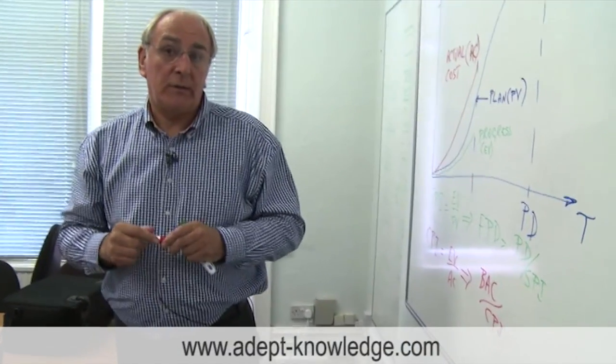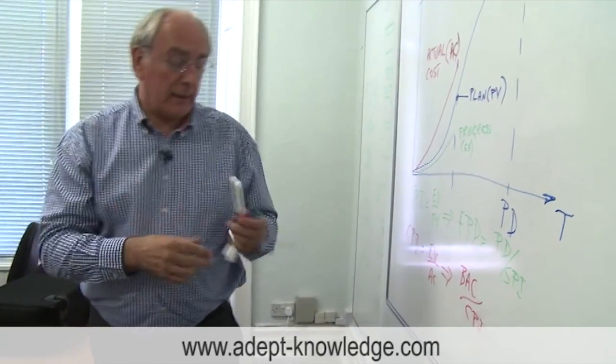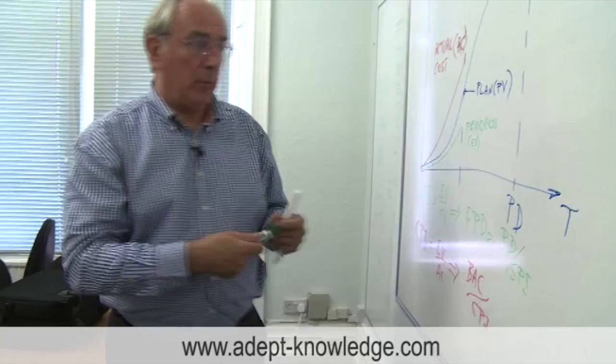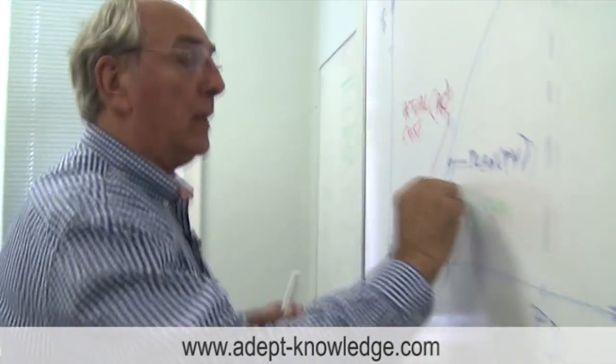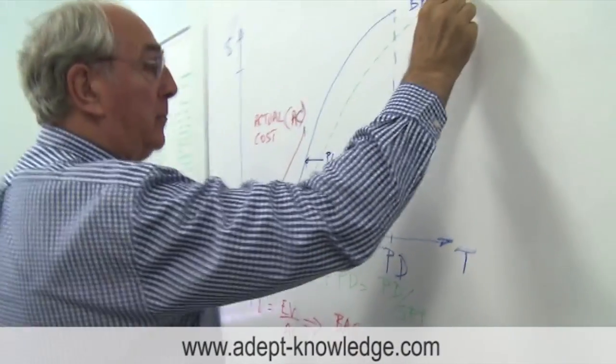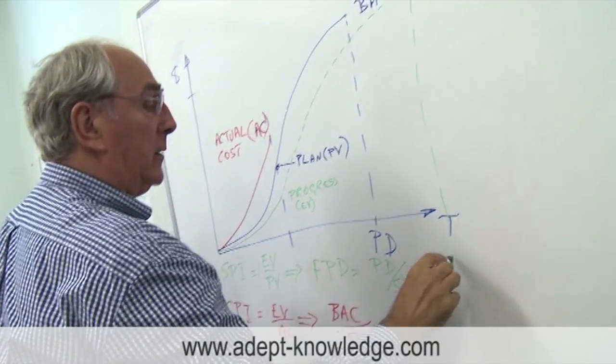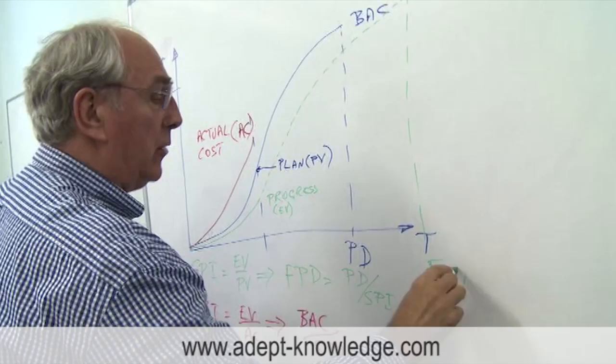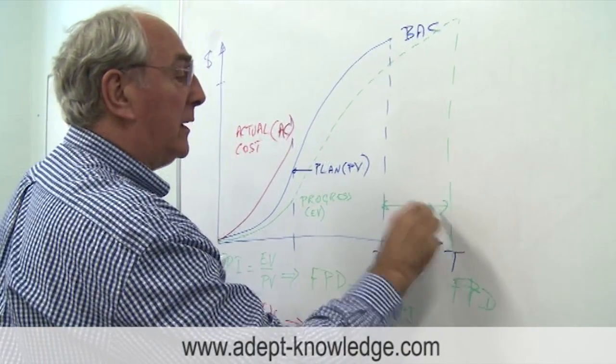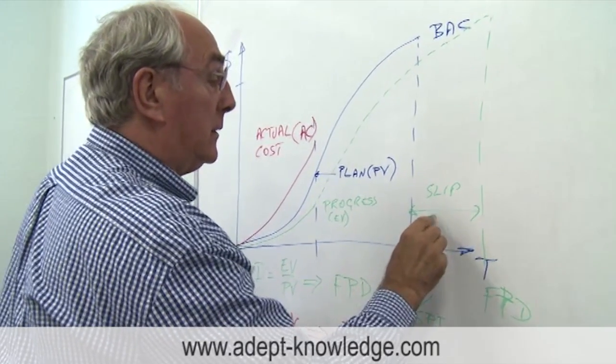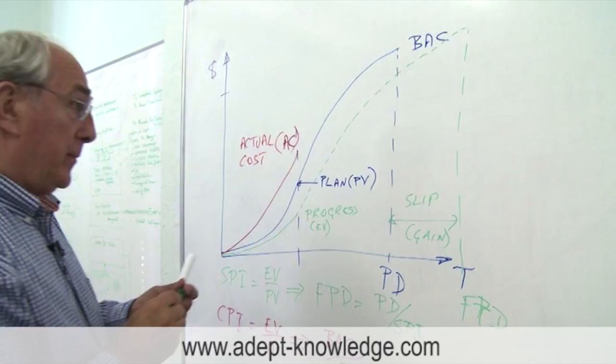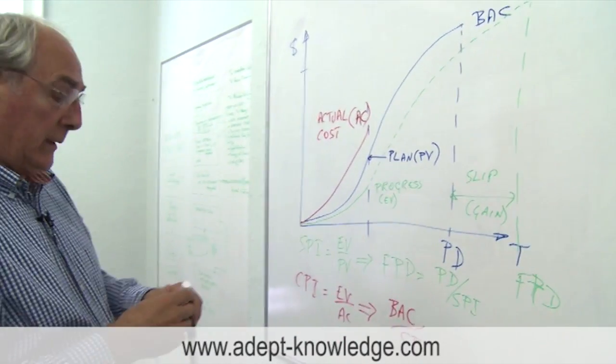If I show you those things diagrammatically, we can forecast this end time of the project by projecting the progress on this re-estimated plan, telling us this is our forecast project duration and this is our slip or gain, and sadly it's usually a slippage.